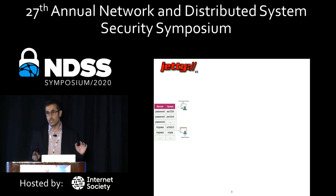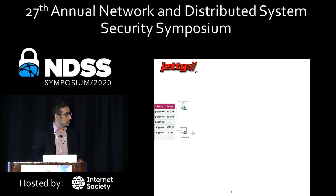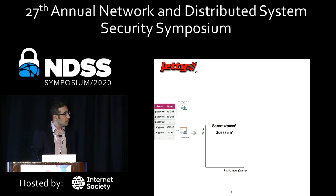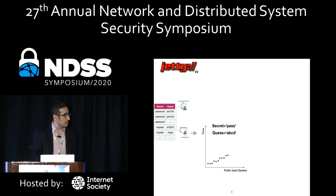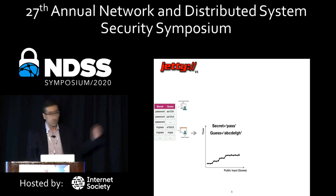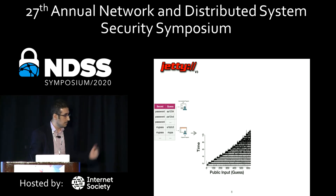We start off by gathering an interesting set of secrets and guesses. We consider two domains. On the original uninstrumented version, we record response time. For a secret like 'pass', we observe the response time of JETI on multiple guesses and so on. As a result, we can fit a function. This function represents the timing function for secret 'pass'. What we have is 800 timing functions for 800 possible secret values.